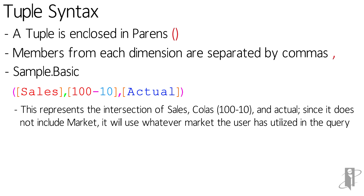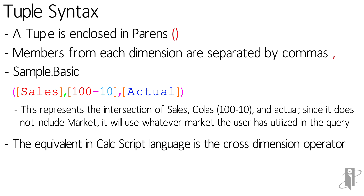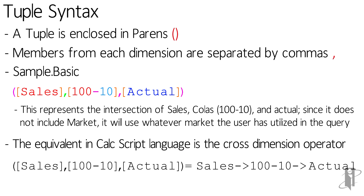Since it does not include Market, it will use whatever market the user has utilized in their query. The equivalent in the calc script language, as I said before, would be the cross-dimensional operator. So the tuple on the left would be equivalent to the cross-dimensional operator on the right, pointing at that particular intersection. Thank you for joining us today on 'What is a Tuple,' and join us for our next webcast soon.